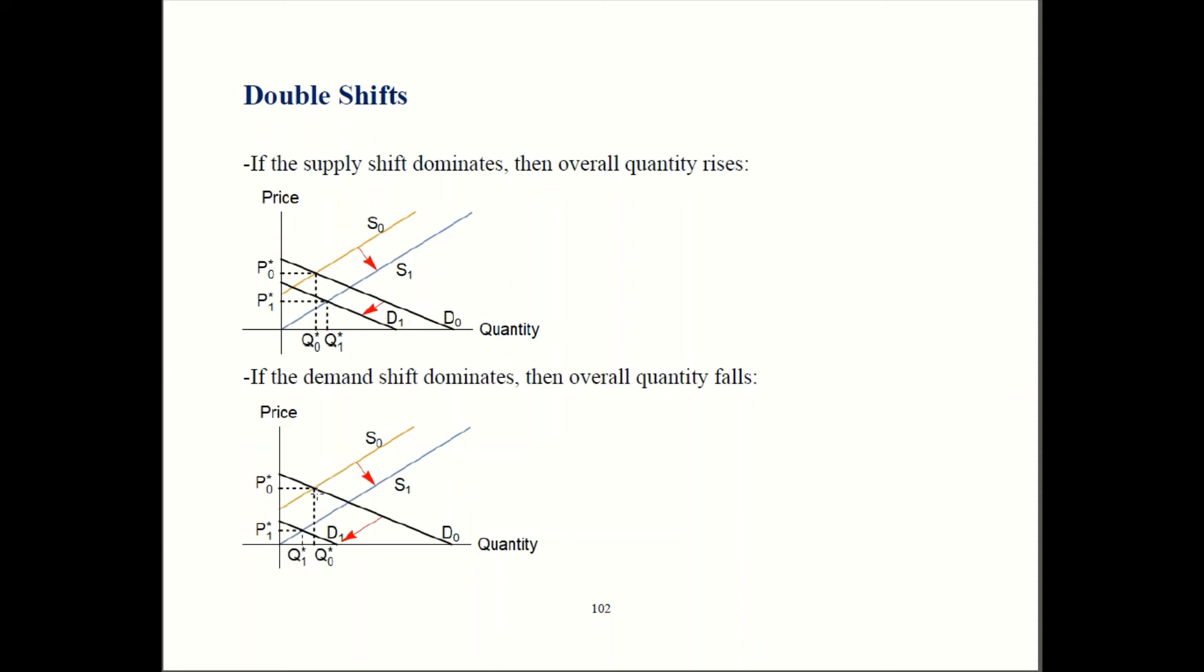So we're starting out over here where those two curves meet. We end up on new supply and new demand. They're going to meet right over here. That gives us a quantity of Q1 star. As you can see, the new quantity, Q1, is smaller than the old quantity.